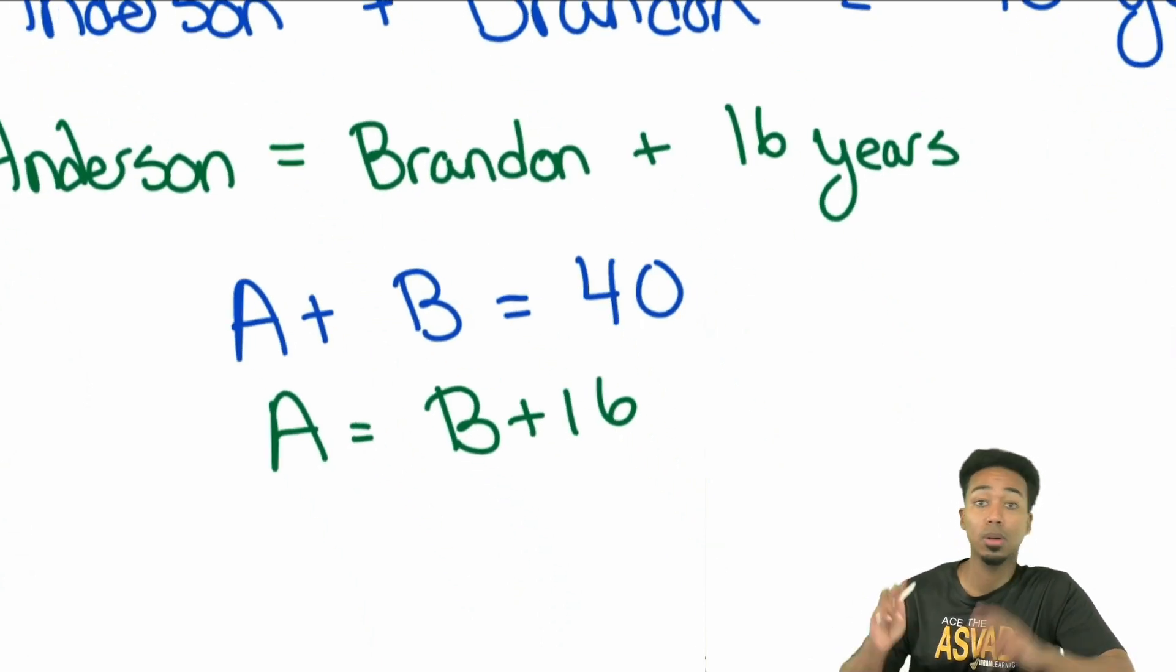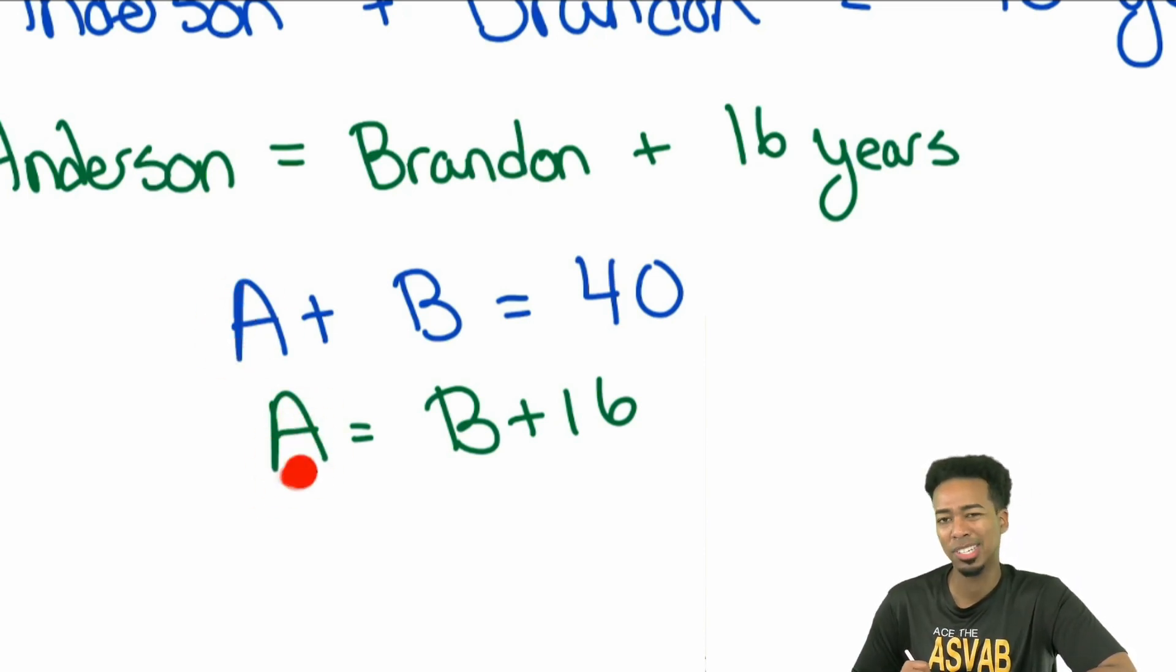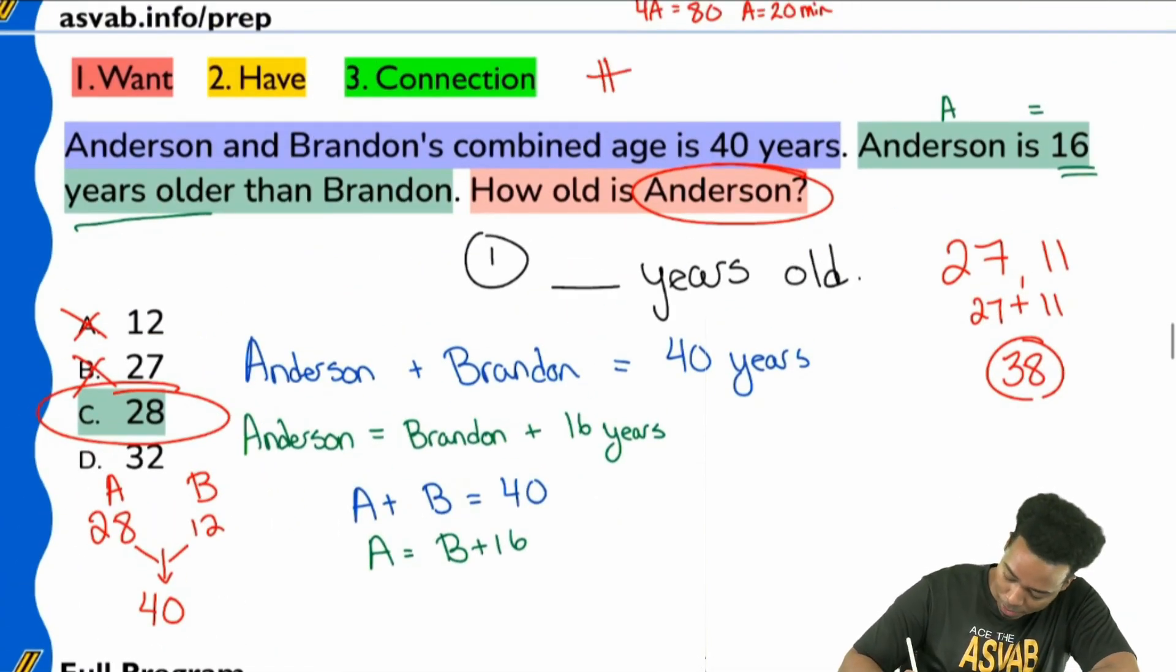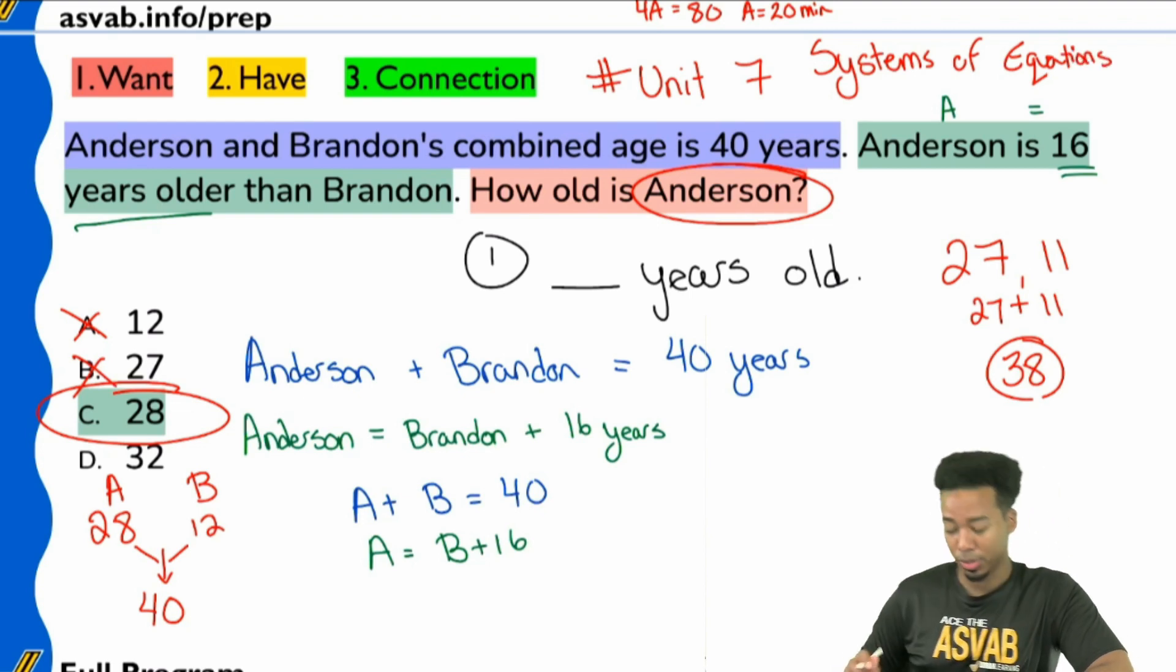So the method that we're going to use here is called substitution. Long story short, here's how it works. You essentially have two equations, number one and number two. They're using the same letters. Everybody, is it true? This A represents Anderson. This A also represents Anderson. Is that true? No worries if we're confused. This is system of equations. I'll tell you exactly what unit to go to in a moment. I got you. But here, both of these A's, they both represent Anderson. And again, this is going to be unit seven of arithmetic reasoning. Unit seven. This is definitely on the harder side as well. But this is systems of equations.